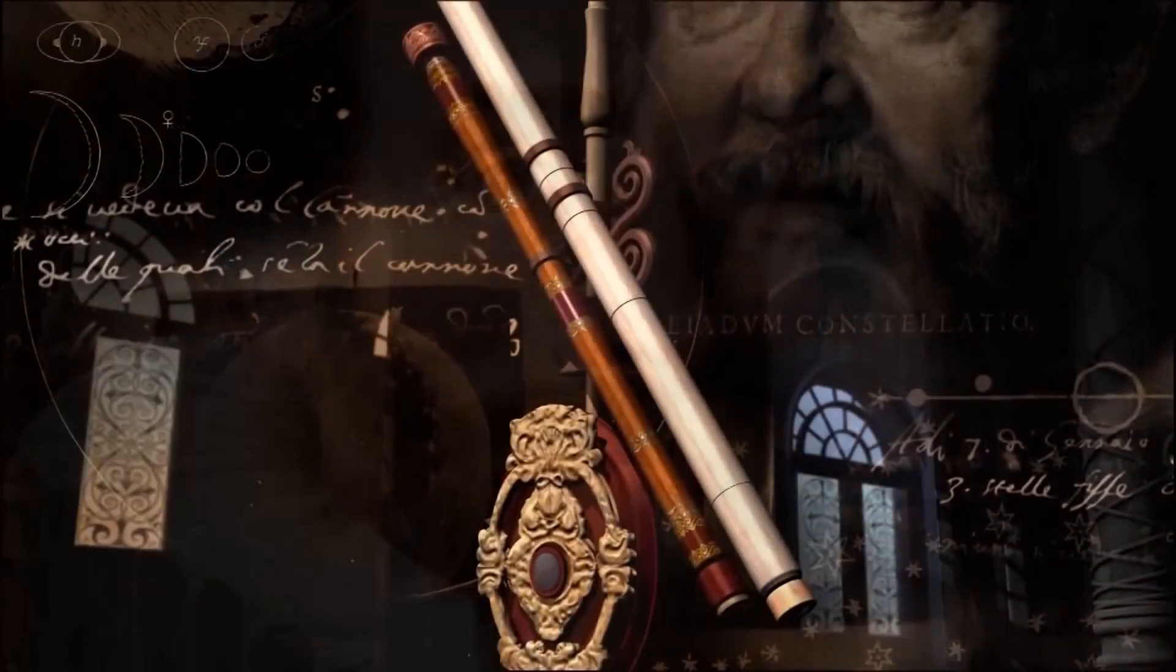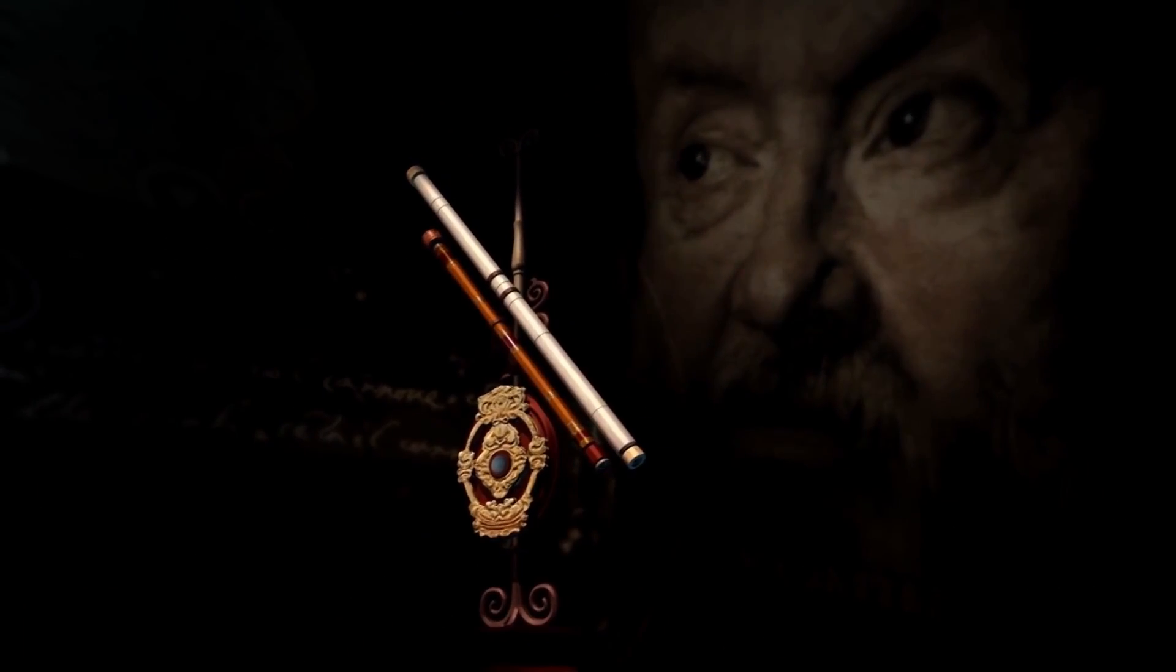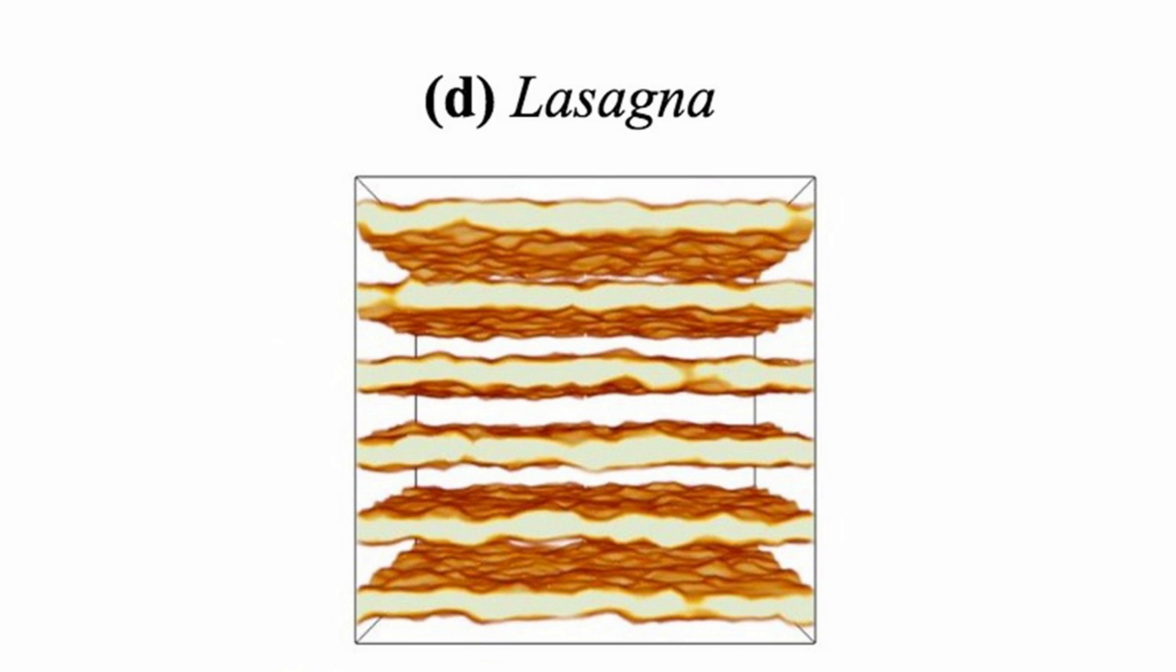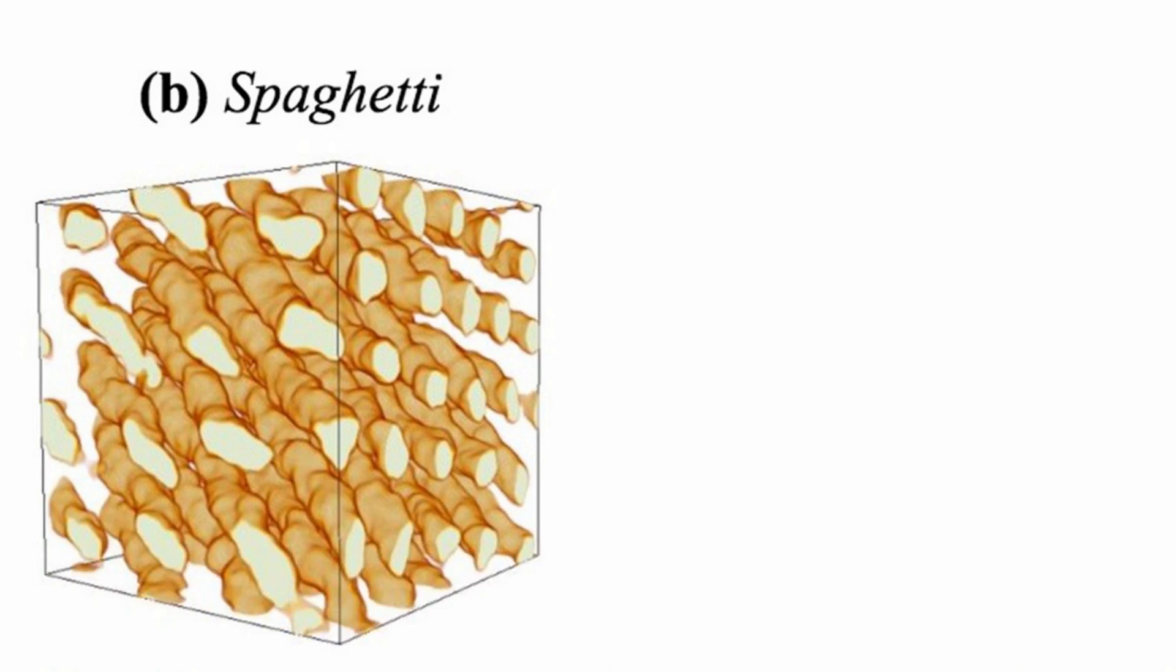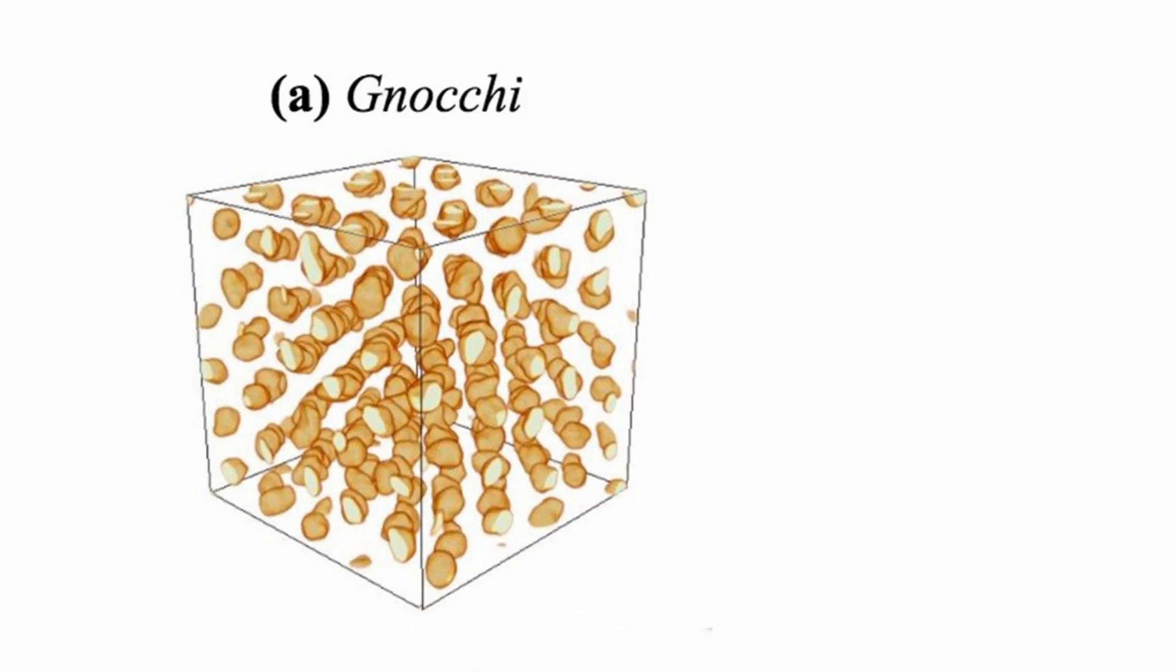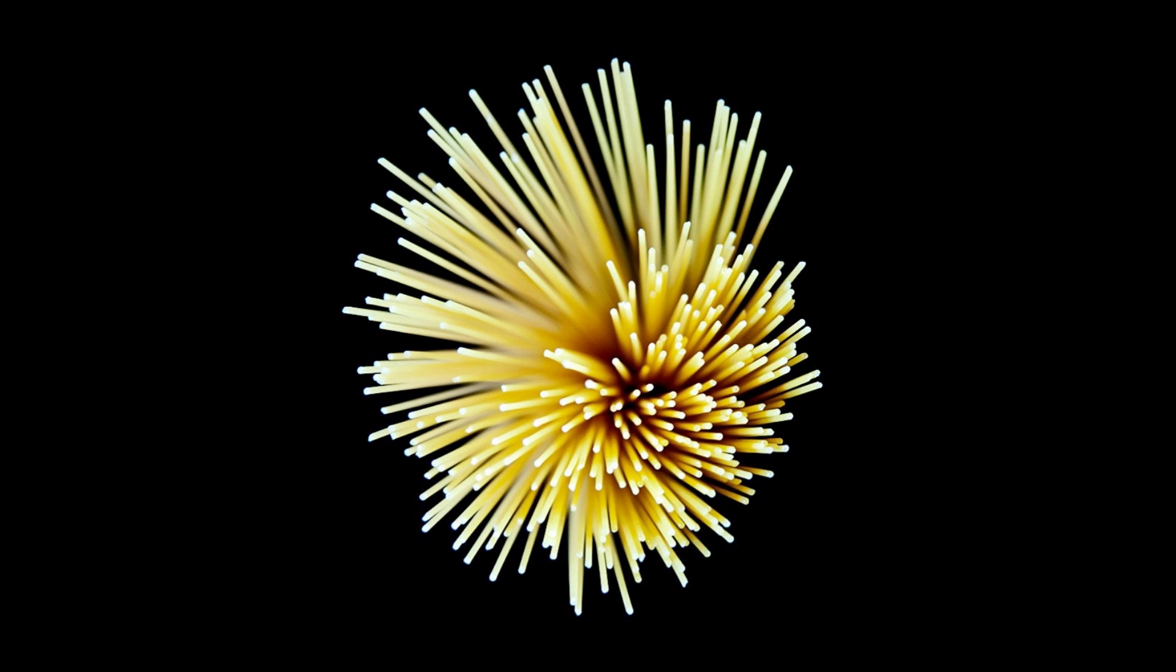This is what physicists Charles Horowitz, Andre D. A. Silverschneider, and Matt Kaplan call the pasta layer. Some of these nuclear structures are flattened into lasagna-like sheets, others stretched into strands like spaghetti. You've got your dumpling-like gnocchi and your tube-shaped bucatini too.